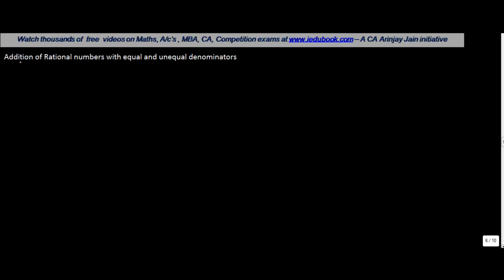Addition of rational numbers with equal and unequal denominators. Let's say you have to add certain rational numbers. Let's take them as 3/7 + 6/7, 4/9 + 3/9, 2/11 + 5/11.